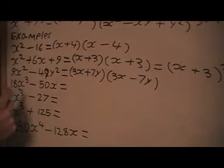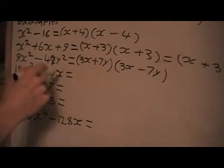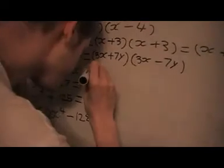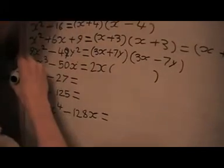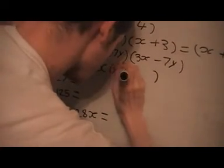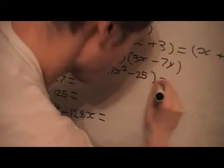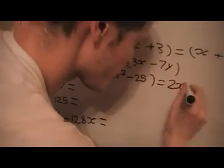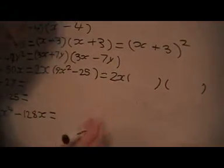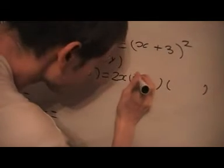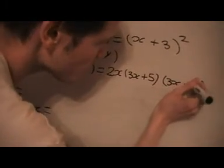And this one here, this doesn't look like a difference of two squares, but notice that 2x is a common factor of this. And then when I take that out, I'm left with 9x² minus 25, which is a difference of two squares. So then I can factor that inside part more as a difference of two squares, and I'll get 3x plus 5 and 3x minus 5.